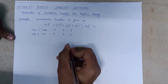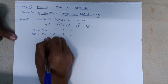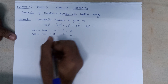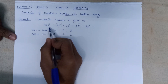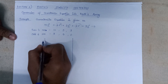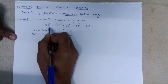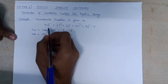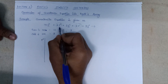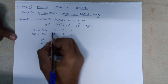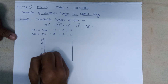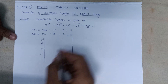After this step we need to form a Routh array. The Routh array will have rows arranged as s to the power 4, then s to the power 3, then s to the power 2, then s to the power 1, and finally s to the power 0.